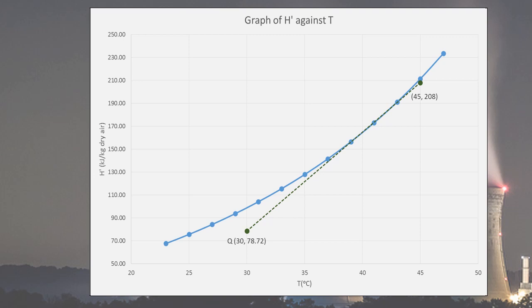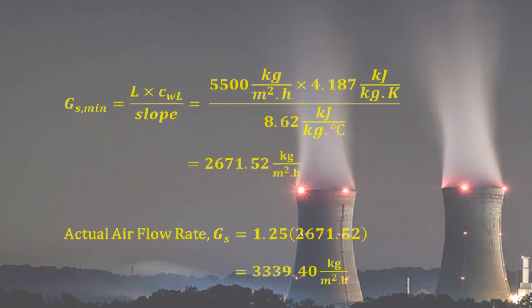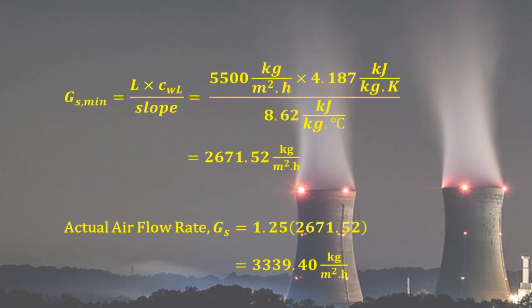Next step, obtain the slope of the tangent to calculate the minimum airflow rate and the actual airflow rate.